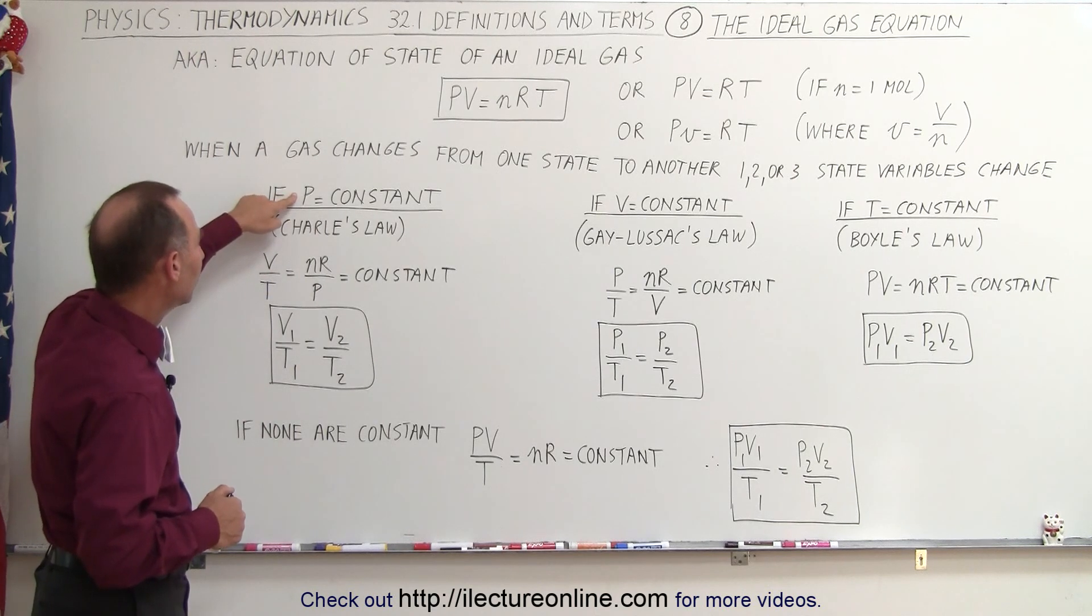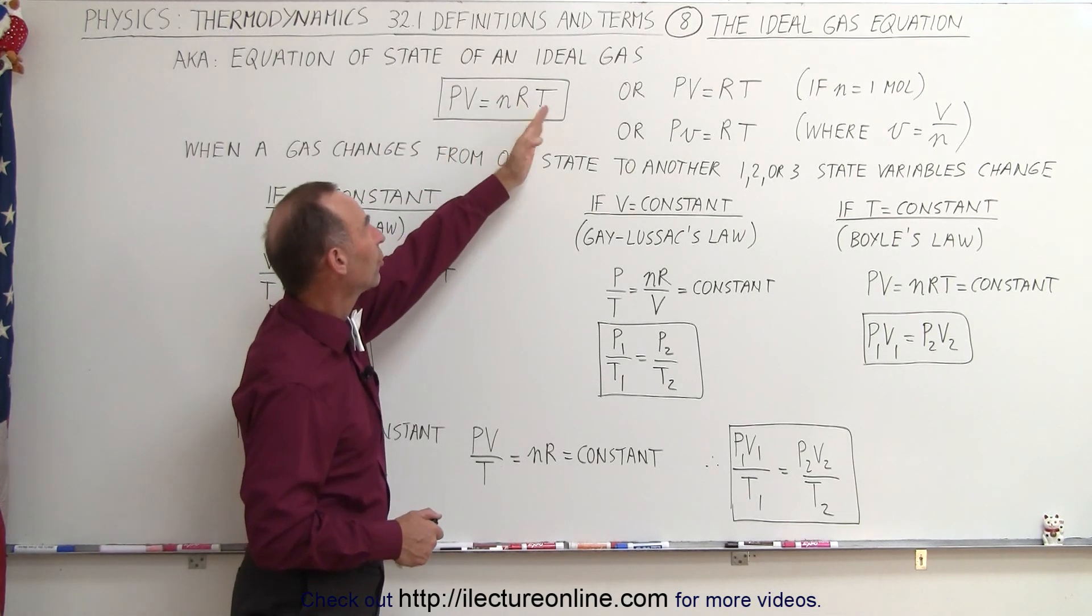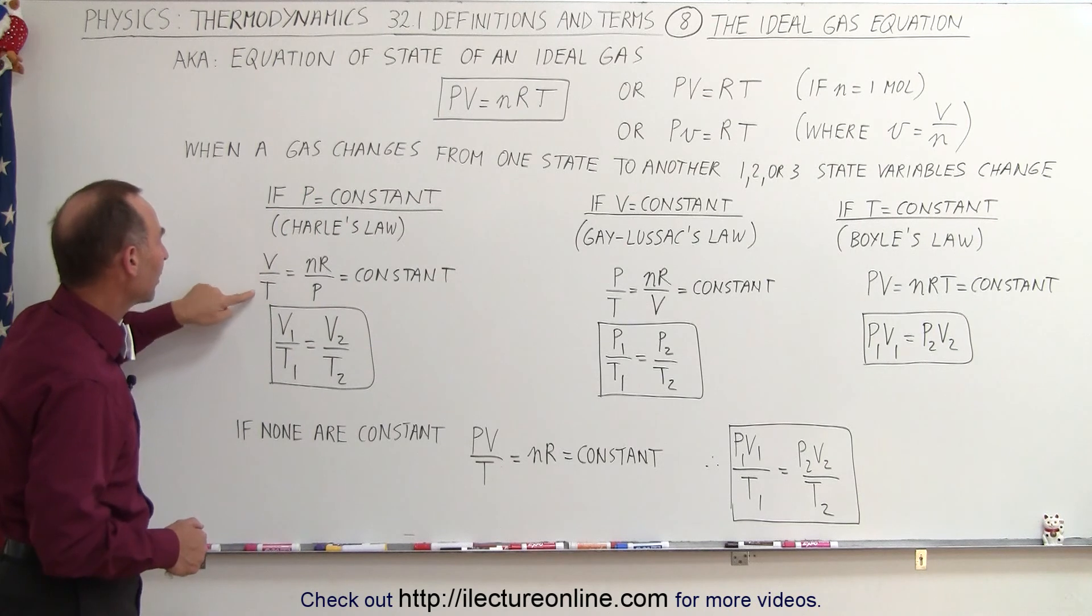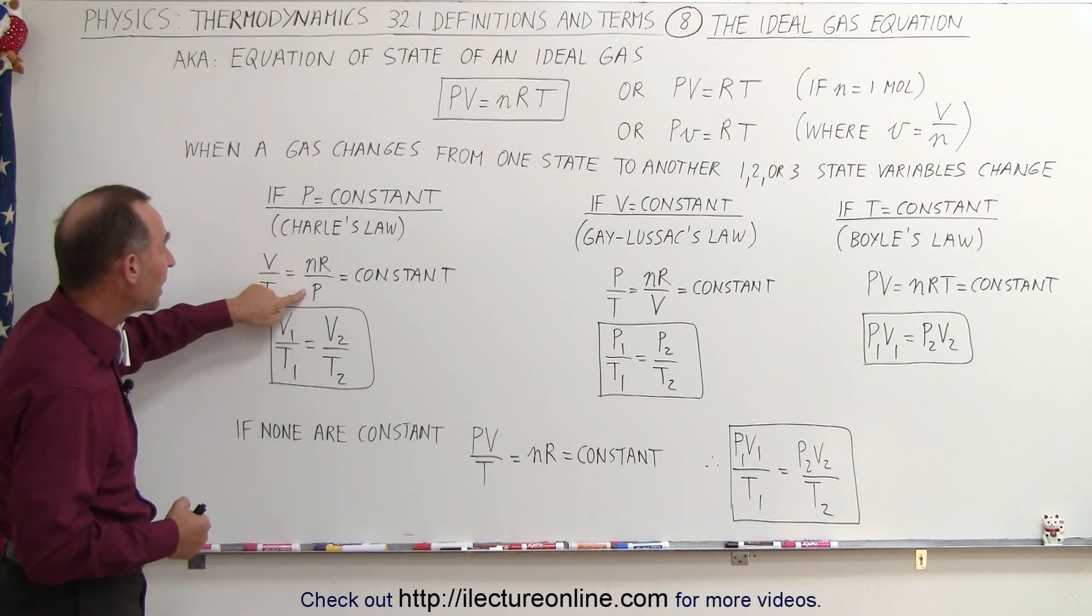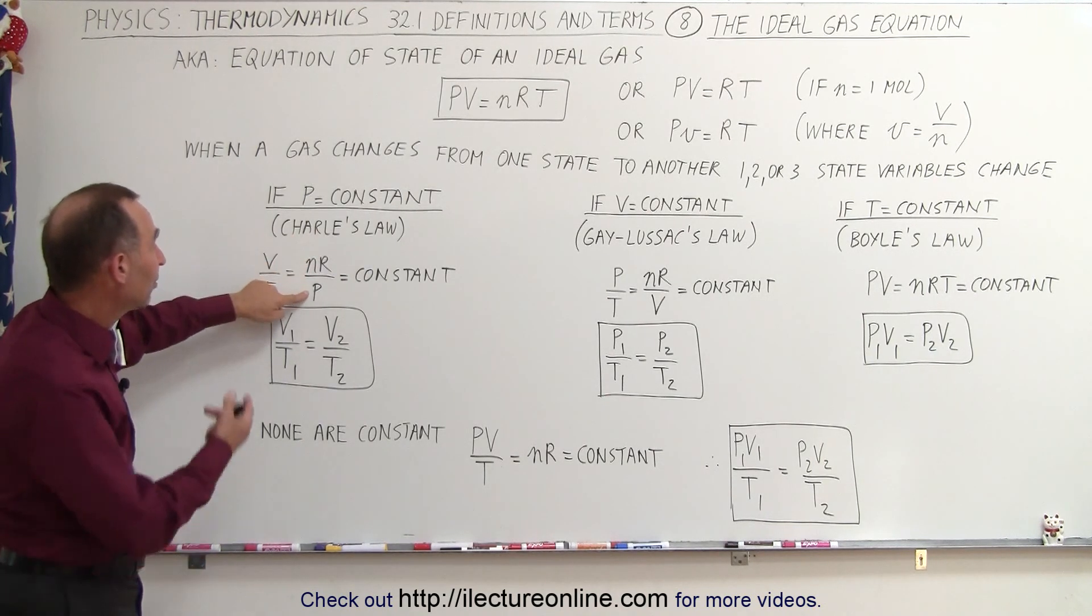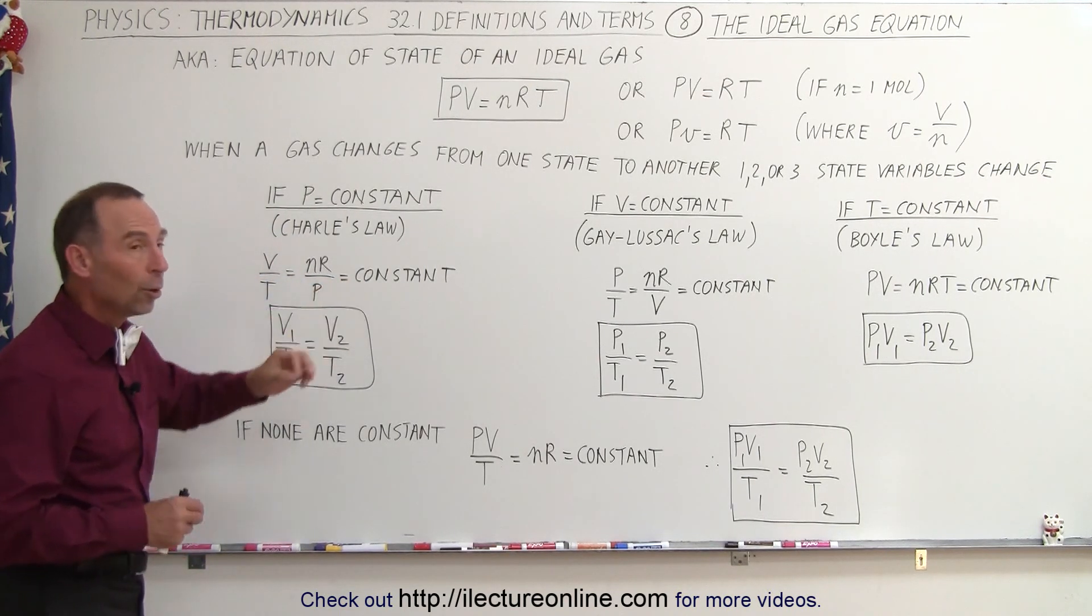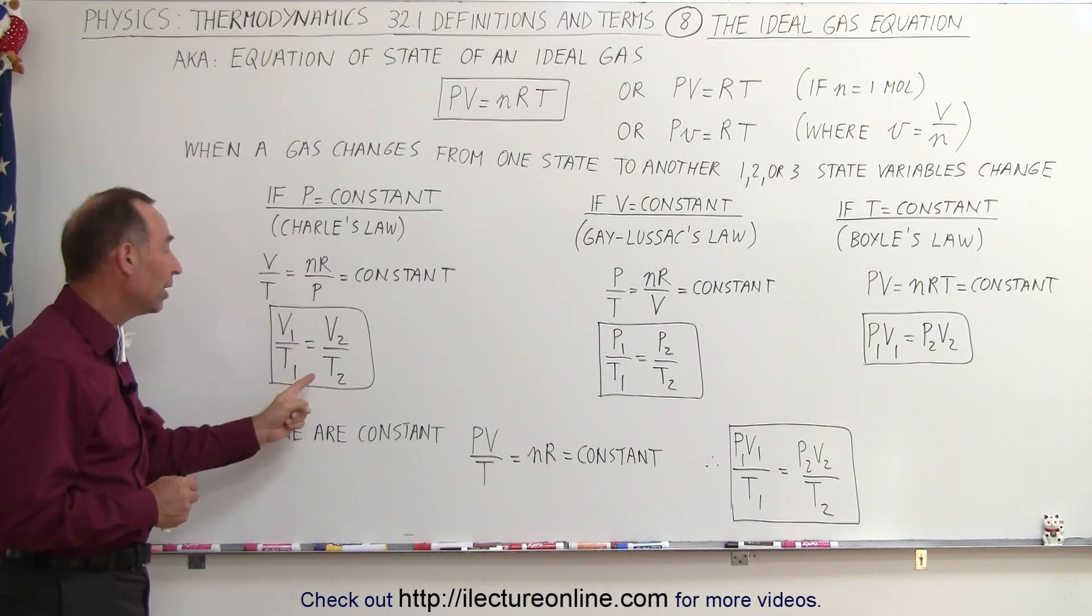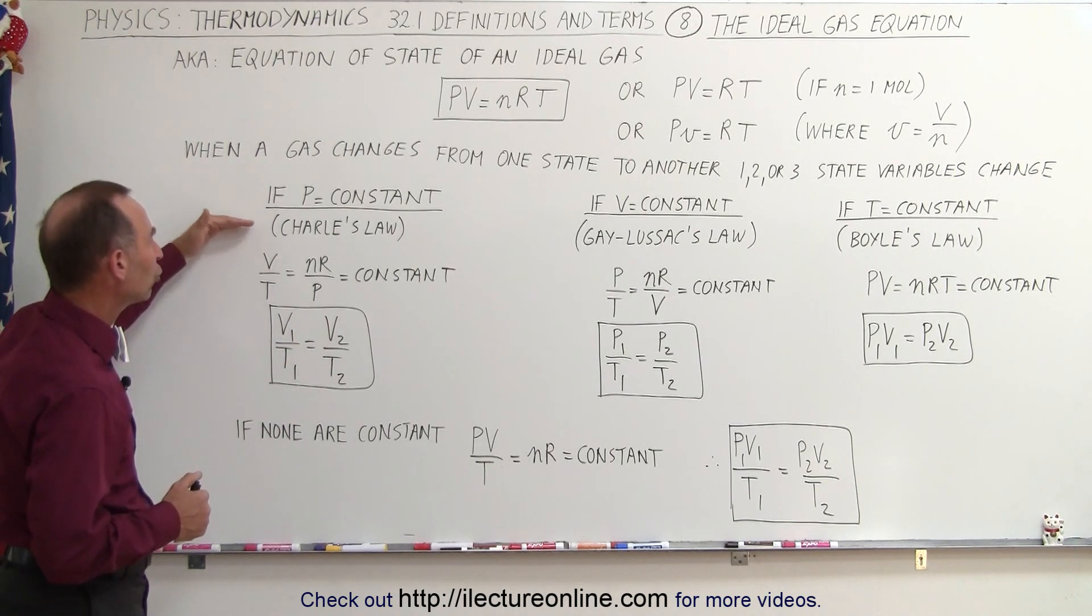If the pressure remains constant, then we can write PV equals nRT by moving all the constant terms to the right, all the terms that change to the left. We end up with V divided by T because those are the two that change, and set it equal to nR over P, assuming the number of moles remain constant, obviously R remains constant, and we set pressure remains constant. So if V divided by T is equal to a constant, we can then say that the volume and the temperature of state one must equal the ratio of the volume and the temperature of state two. That is known as Charles' law.